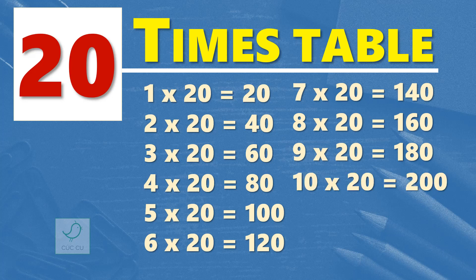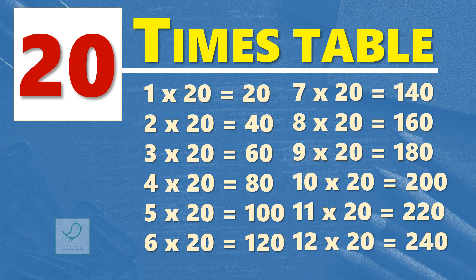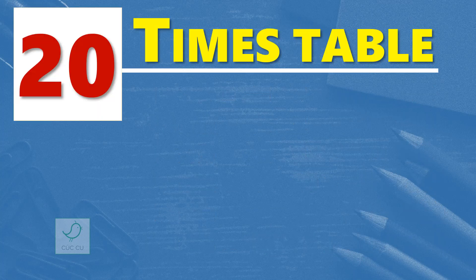11 times 20 are 220. 12 times 20 are 240.